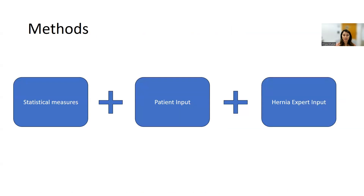To determine the MCID, our group used a combination of three methods. First, we looked up statistical measures and combined this information with patient input about their overall quality of life. We then presented this information to expert hernia surgeons, who integrated the information to yield the final MCIDs.